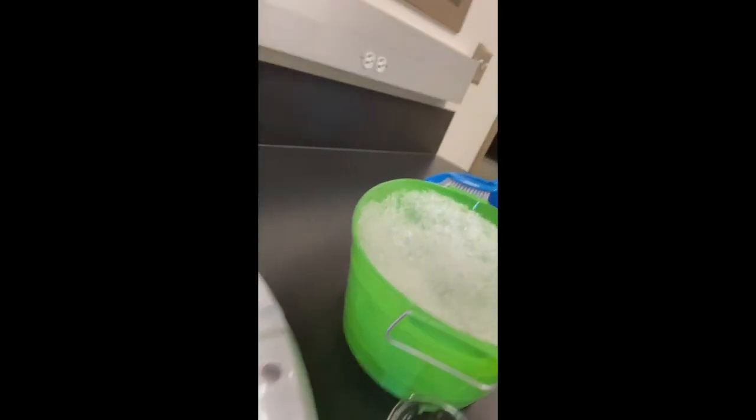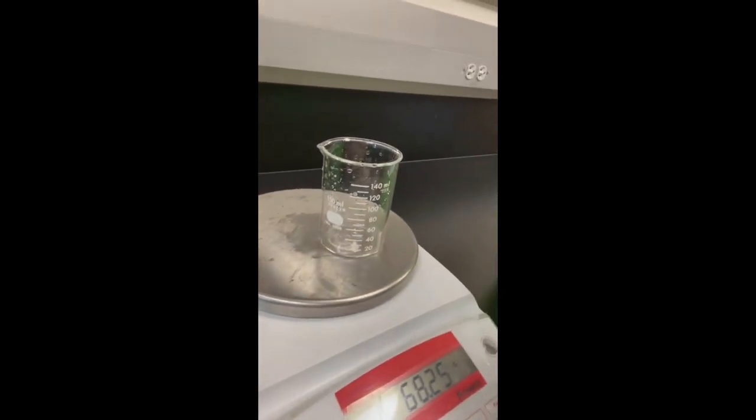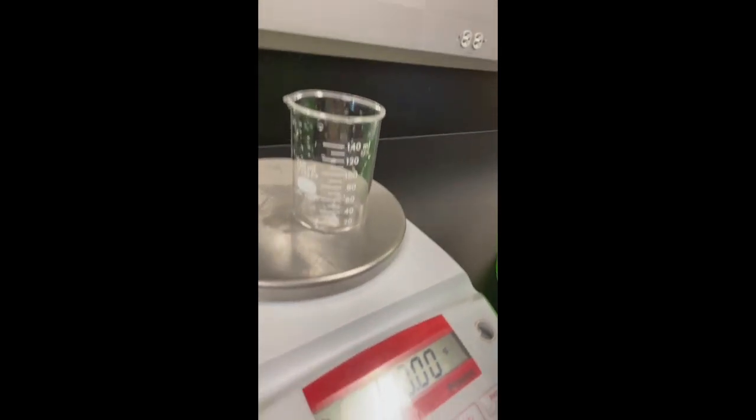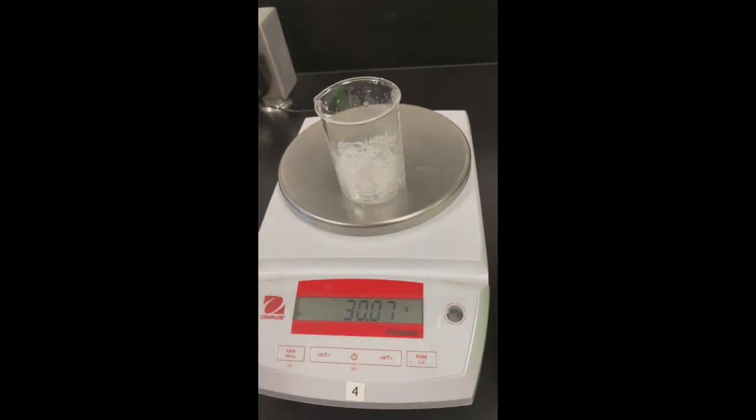Now I'm going to measure out 30 grams of ice in a 150 ml beaker. I've got my ice and my scale here. I'm going to tear out the weight of the beaker by pressing tear. So that zeroed out for me, and I'm going to add ice, 30 grams. There's my 30 grams of ice.